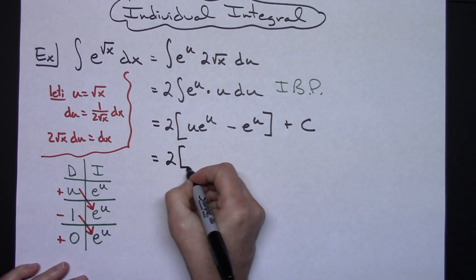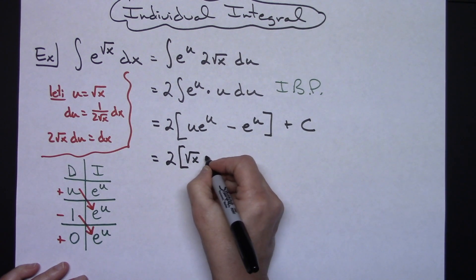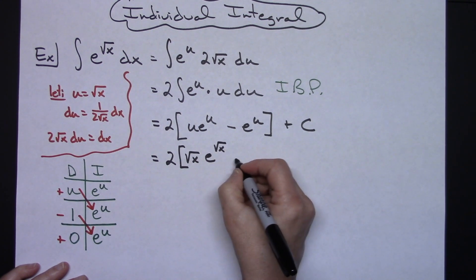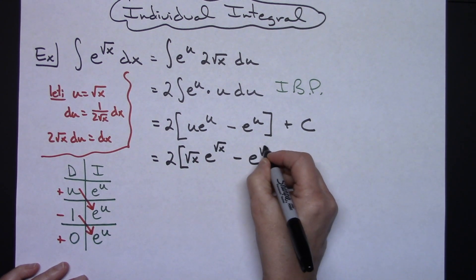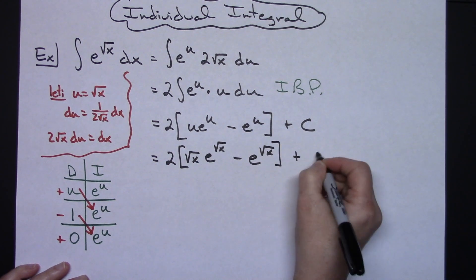Now I'm going to take the u's and I'm going to replace them with square root of x. So I'll have 2 times the quantity, square root of x, e raised to the square root of x, minus e to the square root of x, and then plus C.